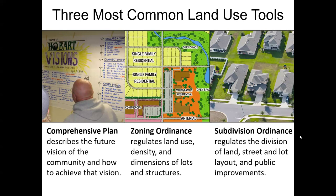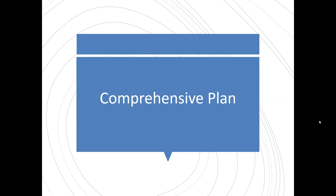In contrast, a subdivision ordinance comes into play typically with new development. It's about creating a legal description for property and regulating the division of land. You might think of this as a typical subdivision, but it can actually apply beyond that. It's really concerned about the layout of new development — the lots, the streets, how that all interconnects, and what public improvements are provided. I'm going to go into each of those three tools in turn and talk specifically about what decisions you might be tasked with and what your role is as a planning commission member.